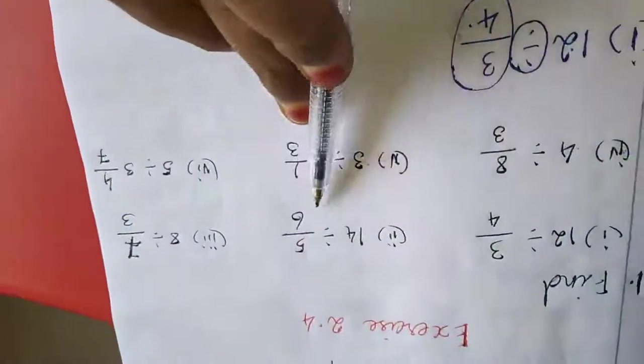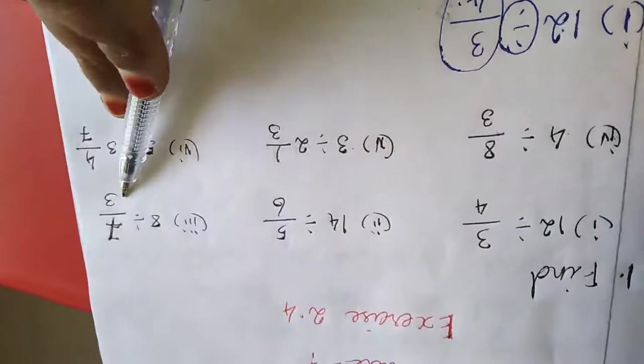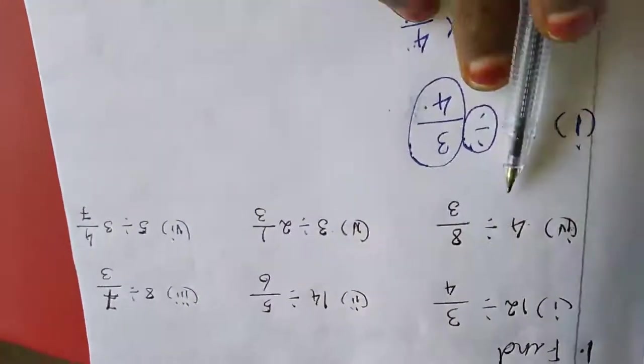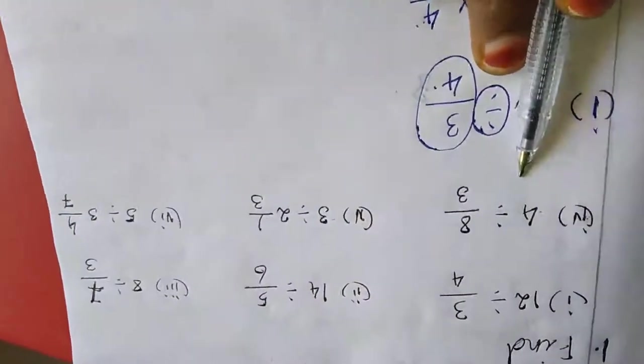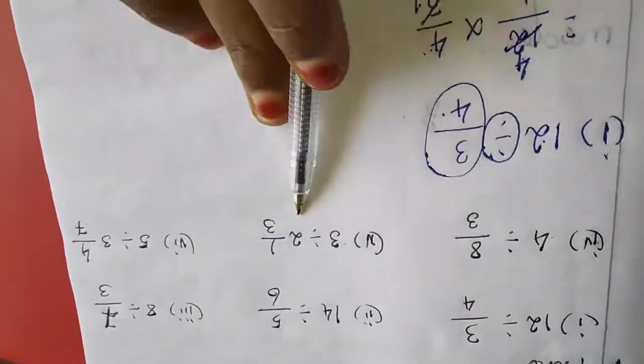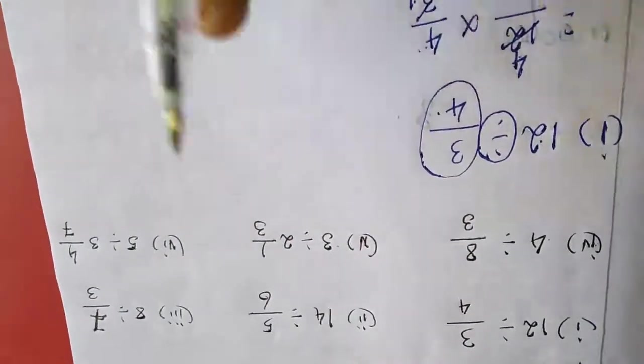Like this, the second sum and third sum follow the same method. Now I am going to do the fifth sum. The fifth sum is 3 divided by 2 and 1/3.